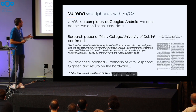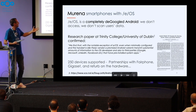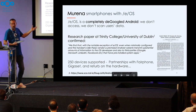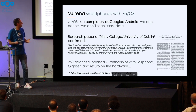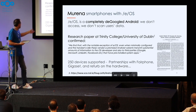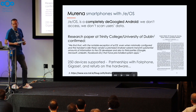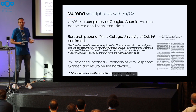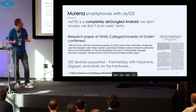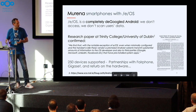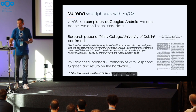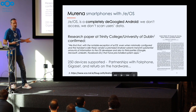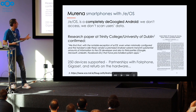We have this operating system that, by design, is not sending any data to Google. We were very happy to learn last year that this was confirmed by a research paper at the University of Dublin — they confirmed that eOS, among all the devices they tested, was the only one sending nothing by default. We support 250 different smartphones today. We have partnerships with hardware vendors like Fairphone, who helped us port eOS to the Fairphone 3 and Fairphone 4. We also work with Gigaset, a German company selling some pretty cool smartphones, and for the US, a partner called TerraCube. We also work with some refurbishers.